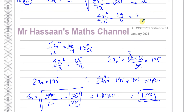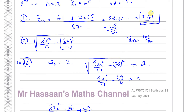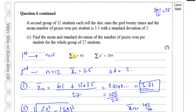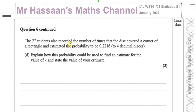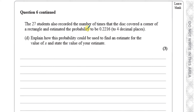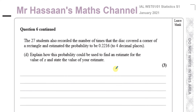The new mean was 103 over 27, which is 3.81. That's part C complete. Now on to part D: the 27 students also recorded the number of times that the disc covered a corner of a rectangle, and estimated the probability to be 0.2216 to 4 decimal places. Explain how this probability could be used to find an estimate for the value of pi, and state the value of the estimate.